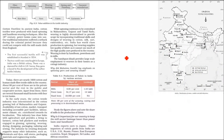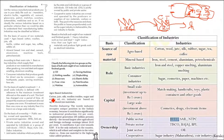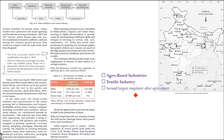Agro-based industries include cotton, jute, silk, woolen textiles, sugar, and edible oil. The first agro-based industry we discuss is the textile industry. Most people in our country are in agriculture — textile industry is the second largest employer after agriculture. It contributes around 4% of GDP.